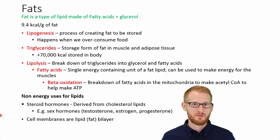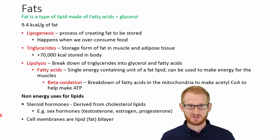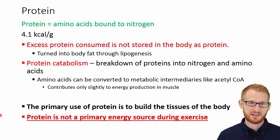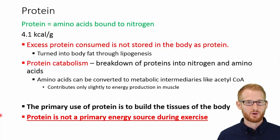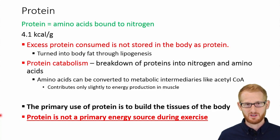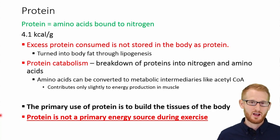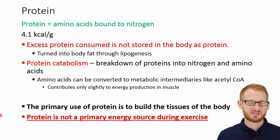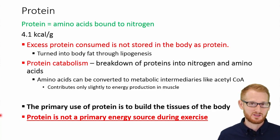Protein is essentially a bunch of amino acids bound by nitrogen, and there are 4.1 kcal of energy per gram of protein. However, our body prefers not to use protein as an energy source, and it's generally best if it doesn't. When we use protein as an energy source, our storage form is essentially things like muscle and organ tissue — lean tissues. So if we're liberating proteins to make energy, we're drawing it out of muscle and shrinking our muscles in the process.